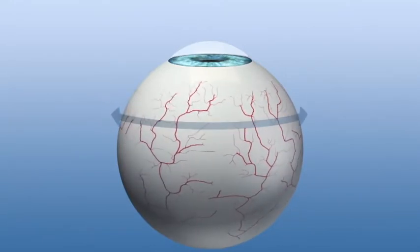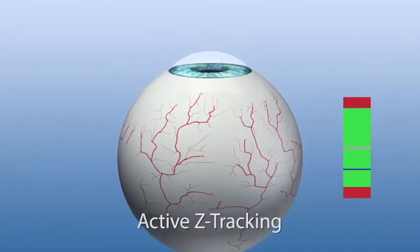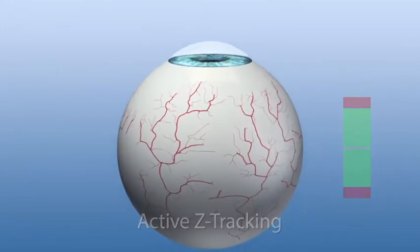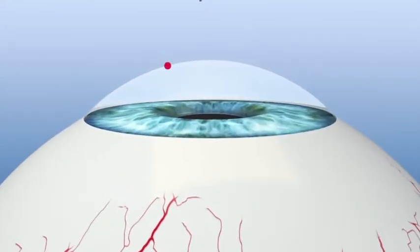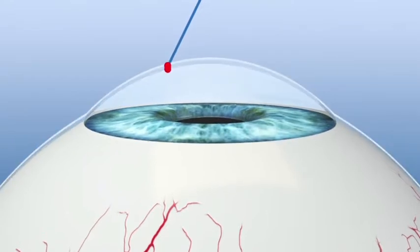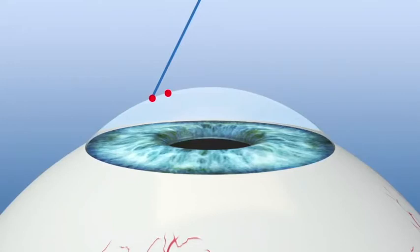Moreover, eye movements along the z-axis are compensated with active z-tracking. Thus, ablative spots are repositioned to actively compensate for the lateral deviations induced by eye movements along the z-axis.